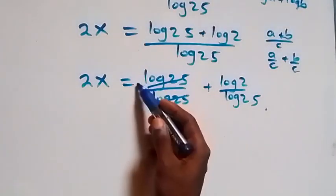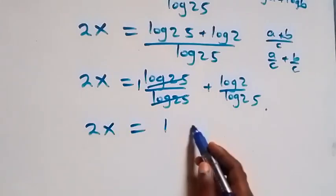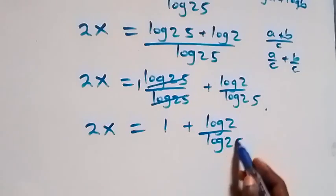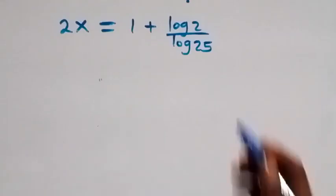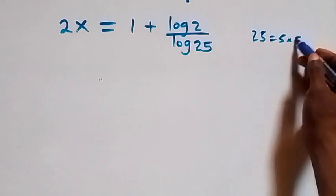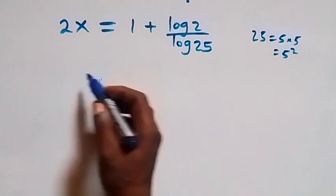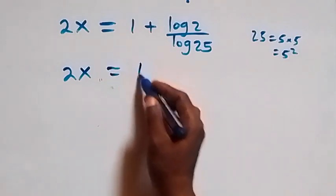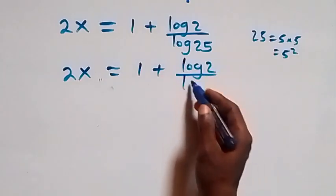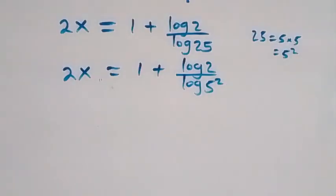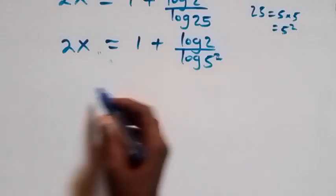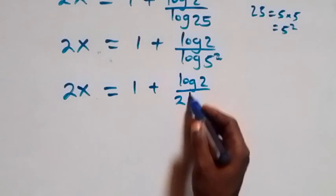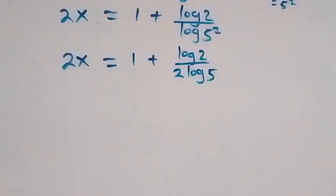We can also reduce 25 as 5 times 5, which is 5 squared. So what we have becomes 2x equals to 1 plus log 2 over log 5 squared. Applying the power law, the 2 comes down and we have 2x equals to 1 plus log 2 over 2 log 5.